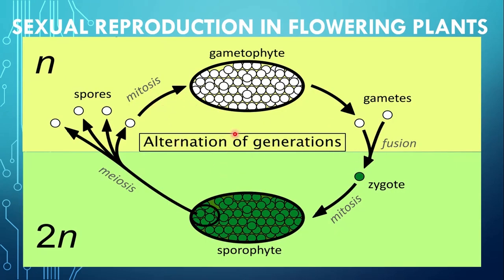Is alternation of generation ko is diagram ke zariye clearly understand kiya ja sakta hai. It's a sporophyte that is having 2N or diploid number of chromosomes. 2N hone ki wajah se meiosis ka process hoga, aur as a result of meiosis, haploid spores banenge with N number of chromosomes. Then these spores will develop into gametophyte by mitosis, which is haploid or having 1N number of chromosomes. Then this gametophyte mein mitosis ke process ke zariye gametes produce honge. These gametes fuse to form a zygote with 2N chromosomes, and this zygote will develop into sporophyte. Is tarah se yeh alternation of generation ka process chalta hai.